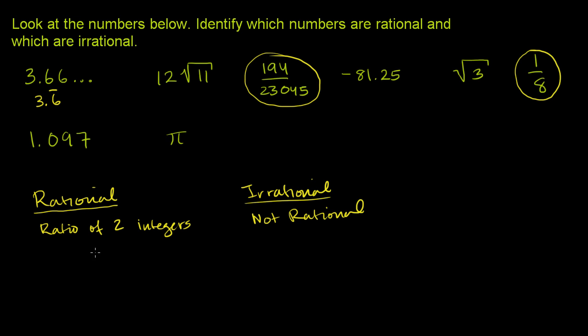A rational number is a ratio of two integers. And any number that can be represented as a repeating or terminating decimal can be represented as the ratio of two integers and therefore is rational.